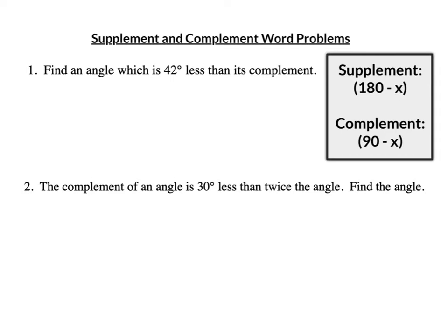Remember, if I have an angle that's 10 degrees, 180 minus x — or 180 minus 10 — would be the supplement. So if the angle is 10, the supplement is 170. Notice they add to 180. For the complement, if my angle was 10 degrees, 90 minus x becomes 90 minus 10, I get 80. So a 10-degree angle and an 80-degree angle are complements.